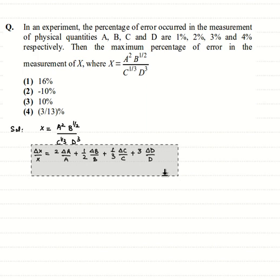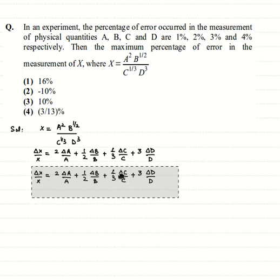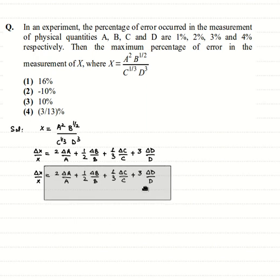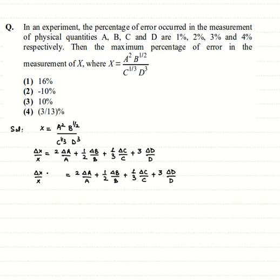That means on both sides we multiply by 100, and the relative error changes to percentage error. So all these values get multiplied by 100 and the relative errors change into percentage errors. This will be 2 times percentage error delta A by A into 100.